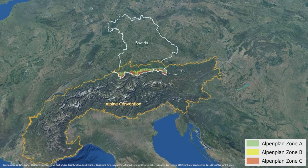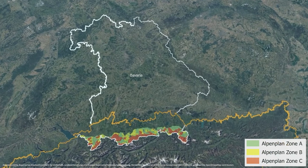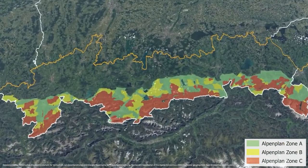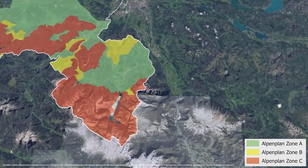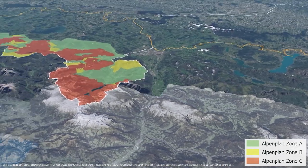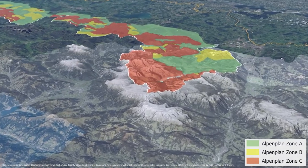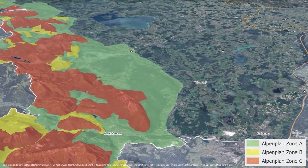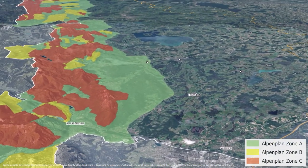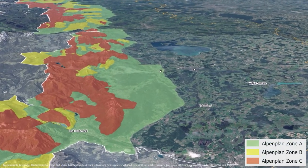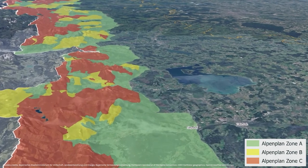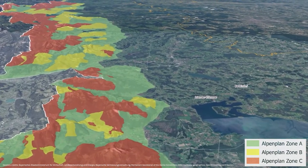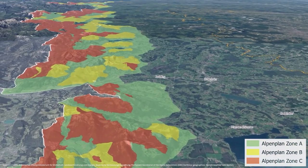The Alpenplan uses a central mechanism: the zoning of the entire Bavarian Alps into three zones. Zone A covers 35% of the Bavarian Alps, includes all settlements, and is suitable for further infrastructure development. Zone B covers 22% and serves as a buffer zone in which infrastructure projects require an individual review of potential environmental impacts. Zone C covers 43% and is designated as a strictly protected zone in which only traditional agriculture, forestry, and non-intensive nature-based recreational activities are acceptable.